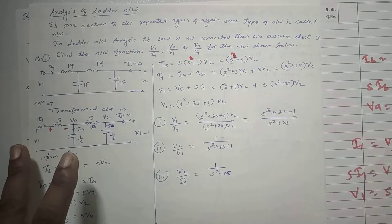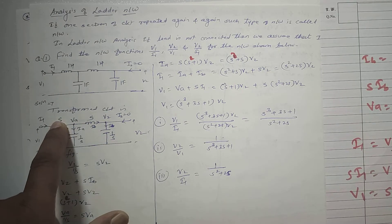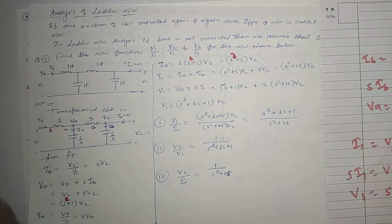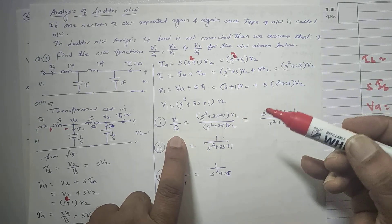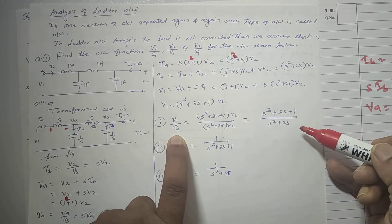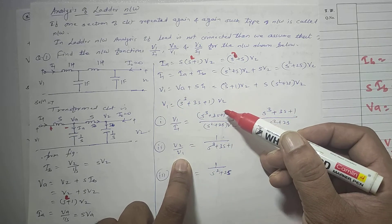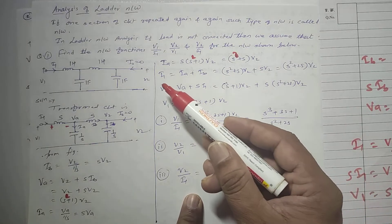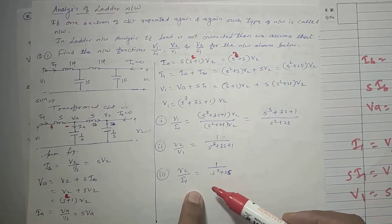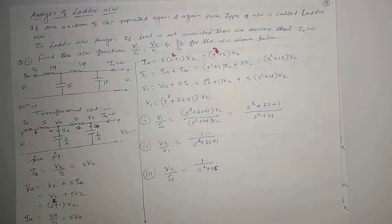So all variables are obtained in terms of V2 by right-to-left analysis: IB in terms of V2, then VA, then IA, then I1, then V1 — all in terms of V2. Then you can take the desired ratios: V1 upon I1 — V2 cancels and you get the ratio. V2 upon V1 gives 1 upon (S³ + 3S + 1). V2 upon I1 gives 1 upon (S² + 2S). Using ladder analysis, we can find various network functions by right-to-left analysis.